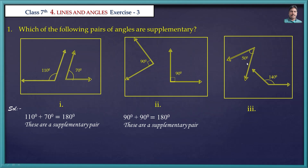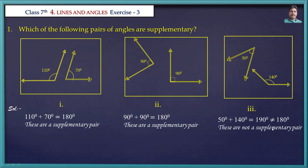See the last figure: 50 degrees and 140 degrees are given. So 50 plus 140 becomes 190. That is not equal to 180 degrees, so these are not a supplementary pair. A supplementary pair must sum to 180 degrees.